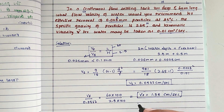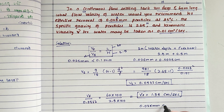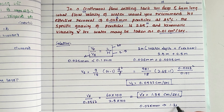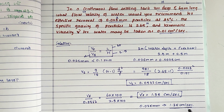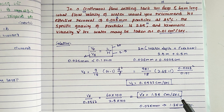Hence, for effective removal of 0.025 mm particles, the flow velocity should not be more than 1.35 centimeters per second. If the flow velocity exceeds 1.35 cm/s, the settling efficiency will decrease. This is how we solve this problem. We will see the next video — thank you.